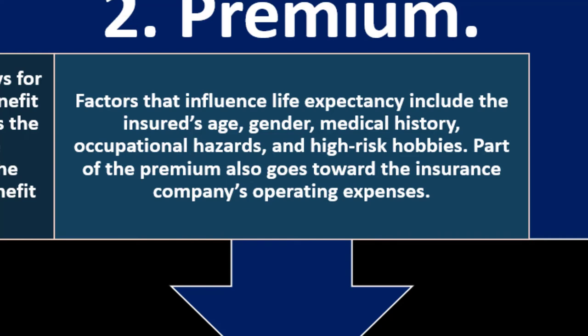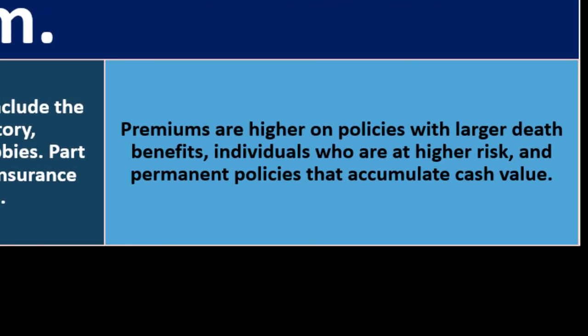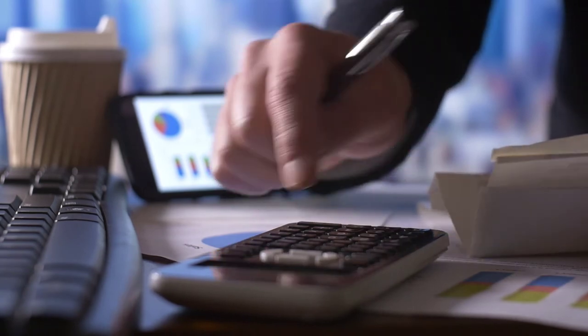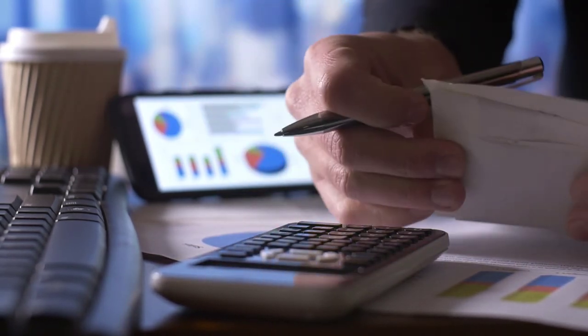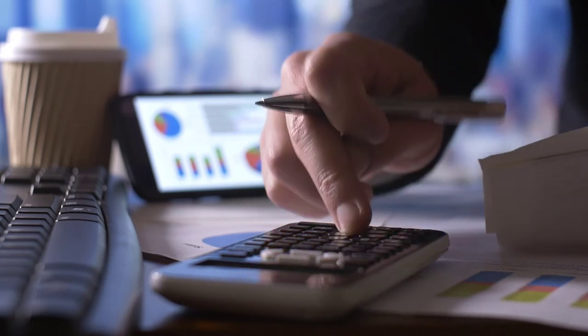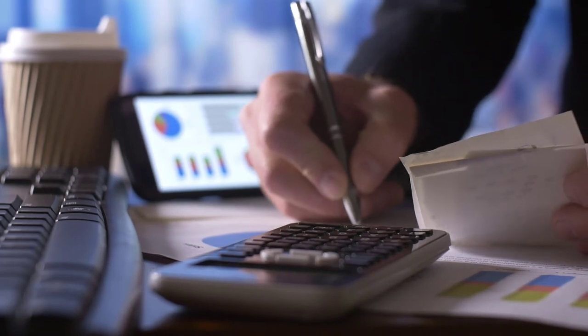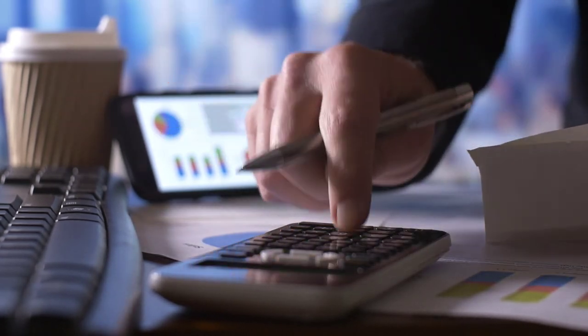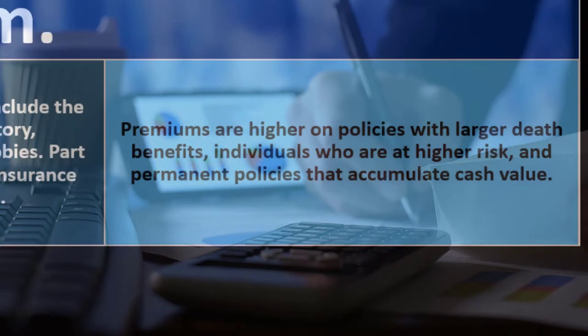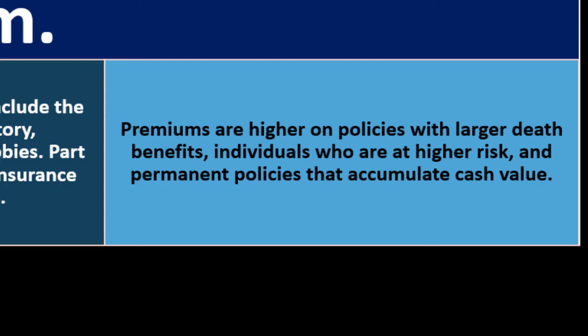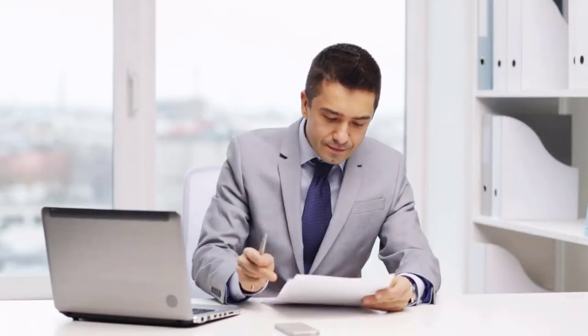Part of the premium also goes towards the insurance company's operating expenses. Premiums are higher on policies with larger death benefits, individuals who are at high risk, and permanent policies that accumulate cash value — because if you want millions paid out upon death, that costs more on the premium side; if you have high-risk behaviors, that increases your risk; and permanent policies with a cash value component combine insurance with investment, so premiums are naturally higher.